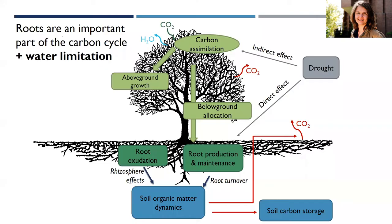Studying root responses to water resources in the soil is particularly tricky because drought affects fine root production in different ways. First, water resources will be more limiting, and typically we'd expect a plant to invest more carbon below ground to forage for those resources. However, drought also influences above-ground physiology — one of the main strategies trees use to minimize water loss is closing stomata in the leaves.